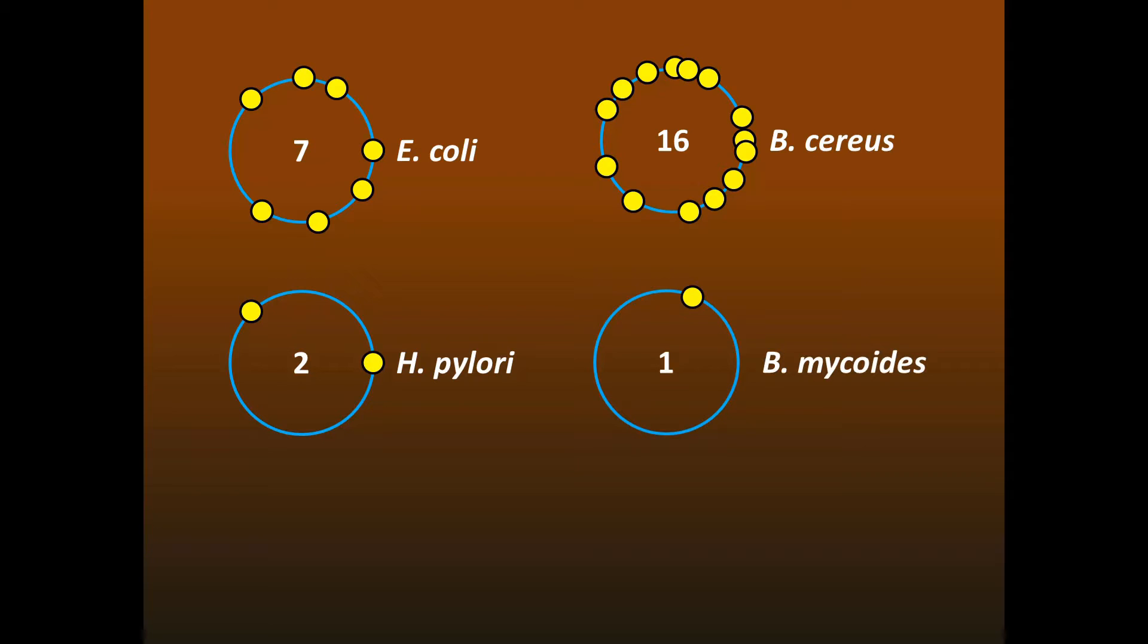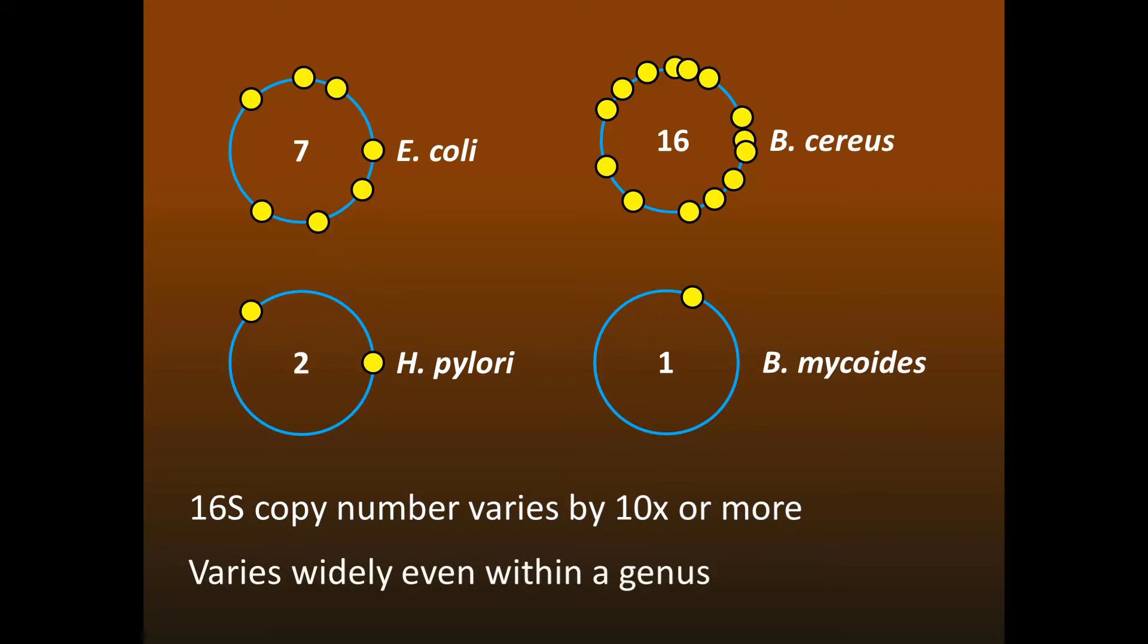Prokaryotes often have several copies of the 16S gene. For example, E. coli has seven copies. H. pylori has two copies. Bacillus cereus has 16 copies. And Bacillus mycoides has just one copy. As you can see, the 16S copy number varies by a factor of 10 or more, even within a single genus, as the Bacillus examples show.